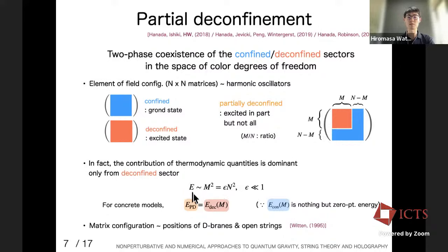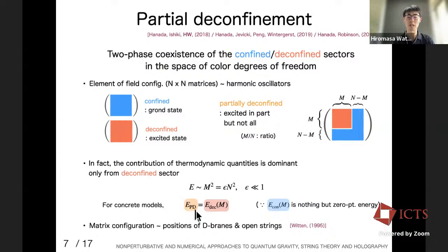If we consider an energy that is not too high and not too low — characterized by a factor M out of N — then in the partially deconfined phase this intermediate energy region is realized. The energy in the partial deconfinement phase is explained only from the deconfined sector, because the contribution from the confined sector is nothing but zero-point energy and cannot contribute to the thermodynamic quantities.